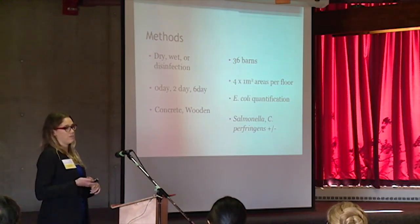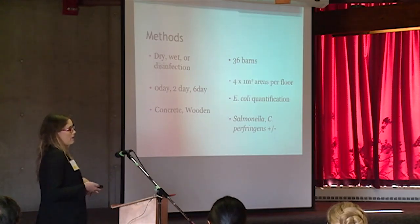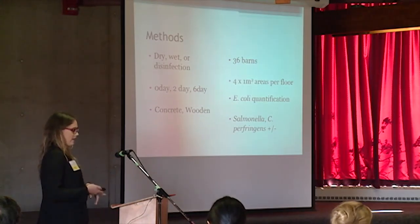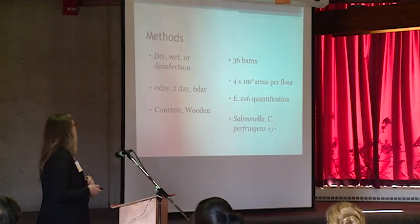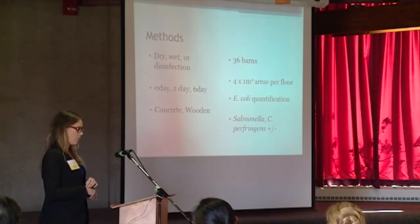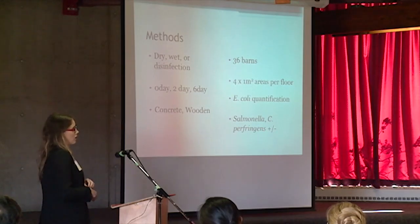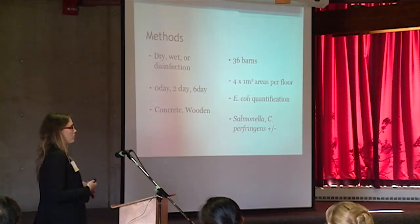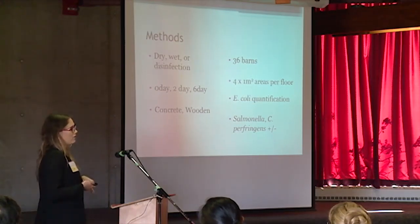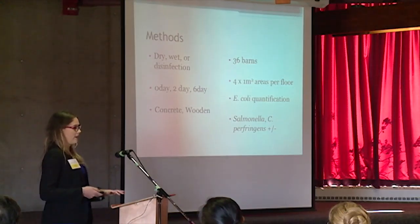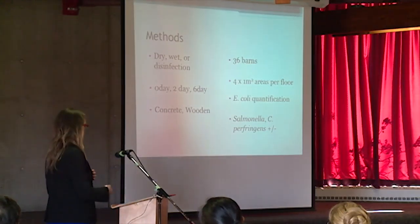We have a baseline which is taken immediately after the litter has been removed, then a two-day post-sanitation, and finally a six-day post-sanitation. These samples are collected from randomly selected one-meter-squared areas using a DE neutralizing sponge. The samples are then sent to the lab where E. coli is quantified, and salmonella and clostridium perfringens are determined to be either present or absent. If salmonella is found, it will further be serotyped.